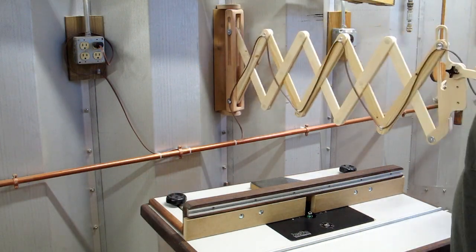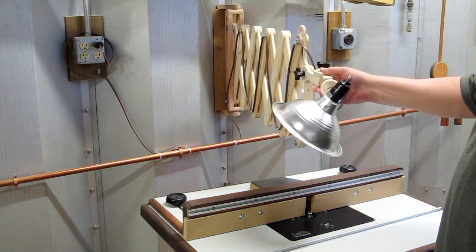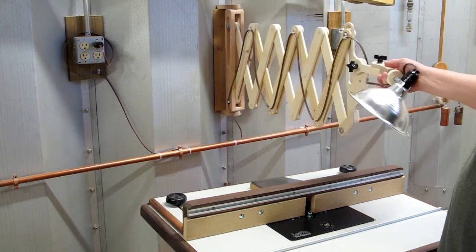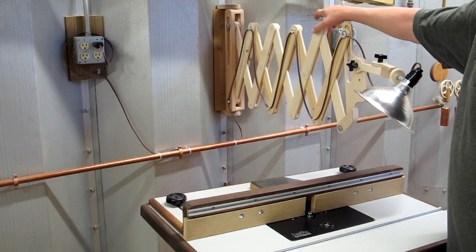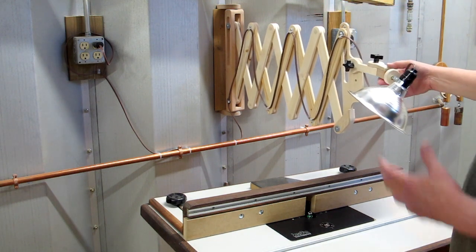This is the unit I made for the router table. This is three lengths wide. It's a lot more flexible. I actually prefer the five length model, it's more rigid.